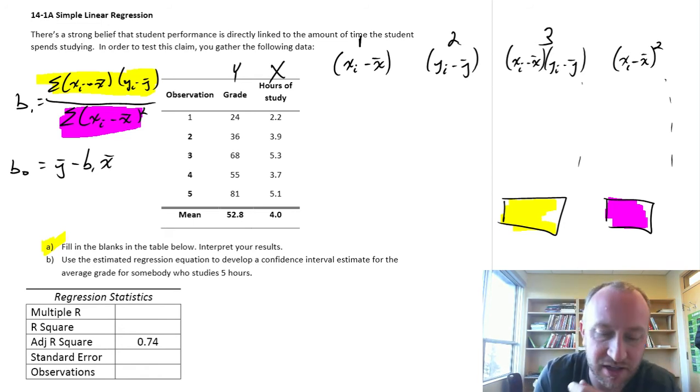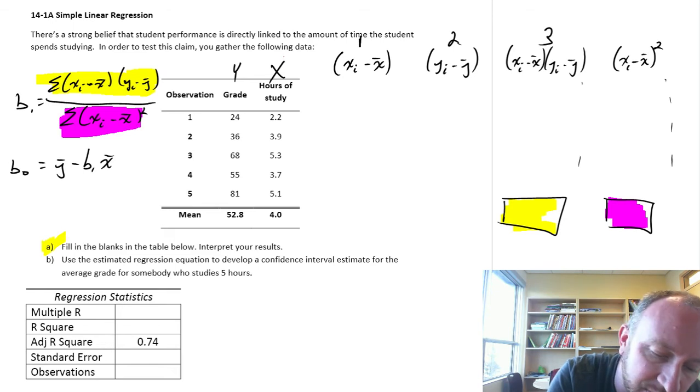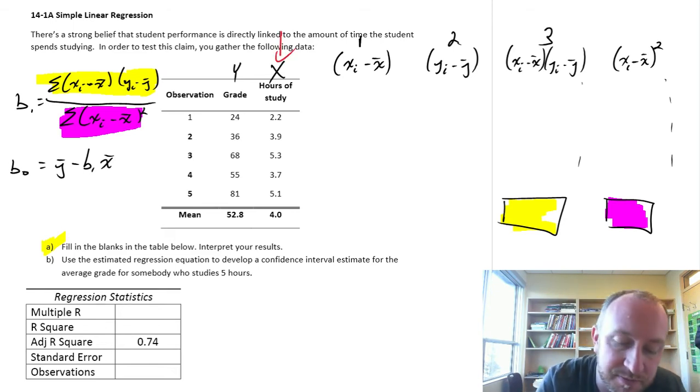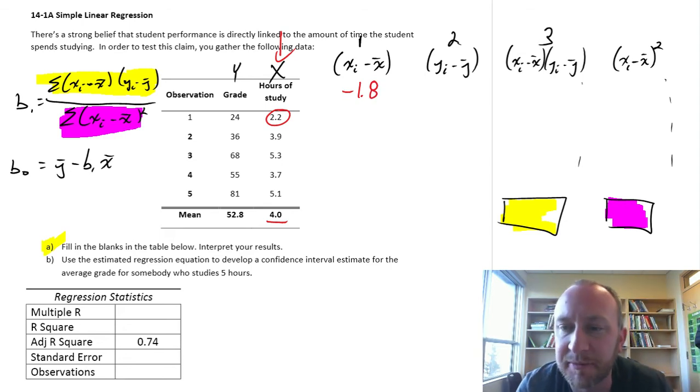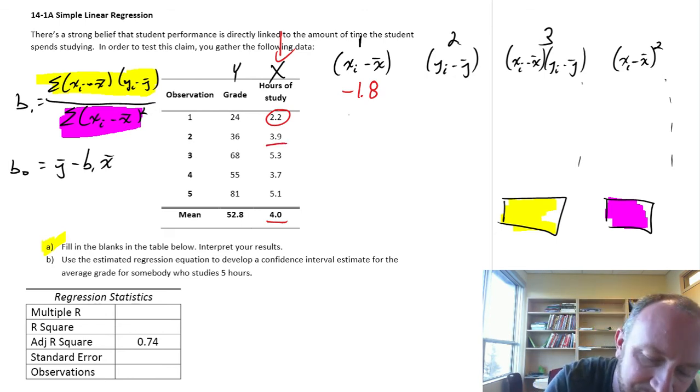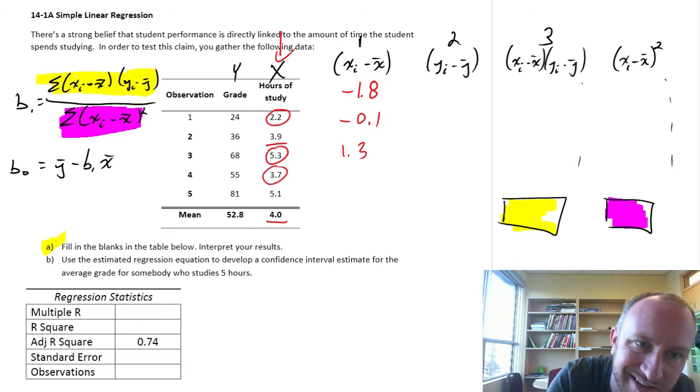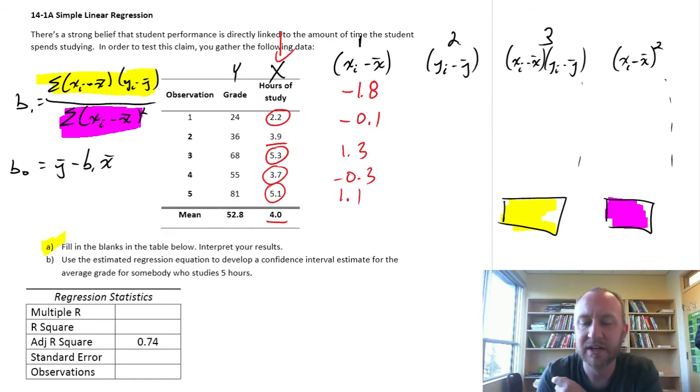I'm going to assume that you guys are okay calculating these differences without me showing you exactly all of them. So what I'm going to do for column A, we're working with our independent variable. The first piece is 2.2 minus 4. I've already got the answers written on my screen right in front of me. So 2.2 minus 4, I get negative 1.8. And then as we go down each of these, 3.9 minus 4, this is minus 0.1. 5.3, this is 1.3. 3.7, negative 0.3. And 5.1 minus 4 gives me 1.1.